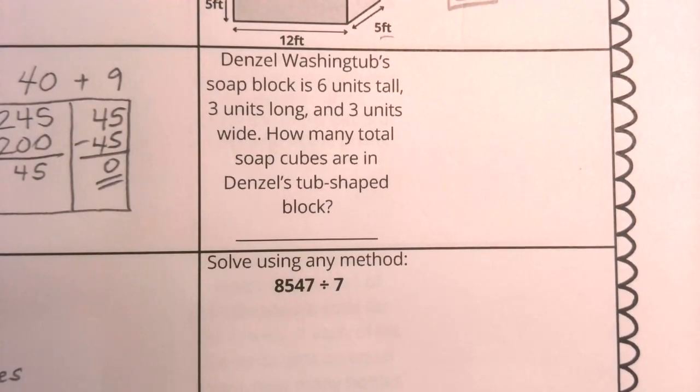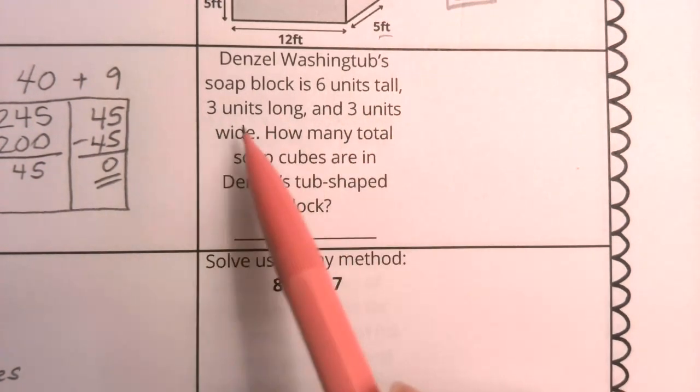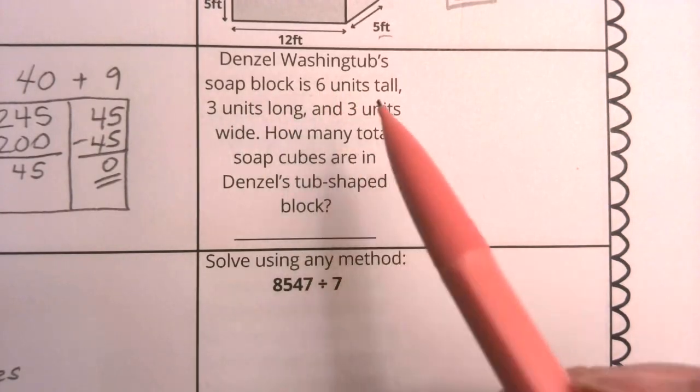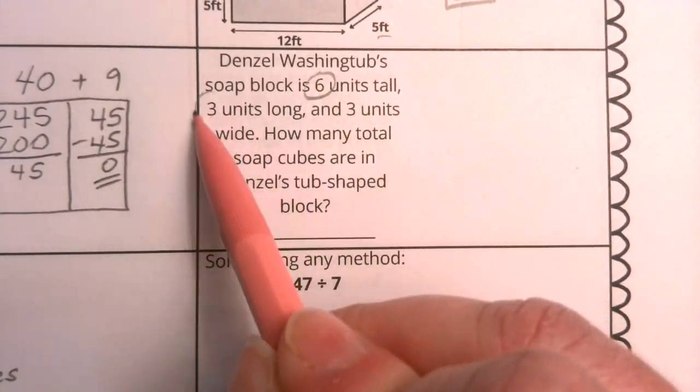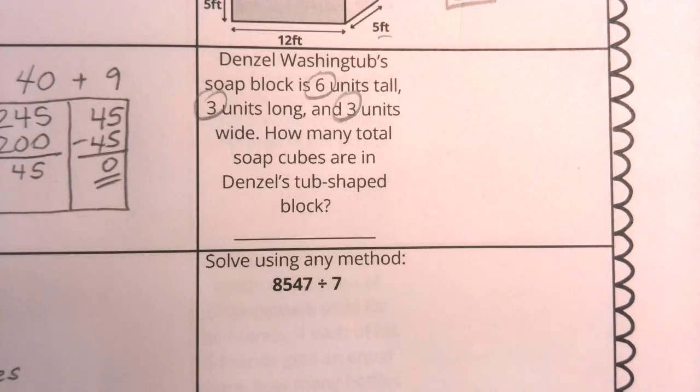Now we're thinking about Denzel Washington's soap block is 6 units tall, 3 units long, and 3 units wide. How many total soap cubes are in Denzel's soap block? So boys and girls, I have my length, my width, and my height right here at this important moment in this sentence, and I need to multiply those together to get to my overall answer.